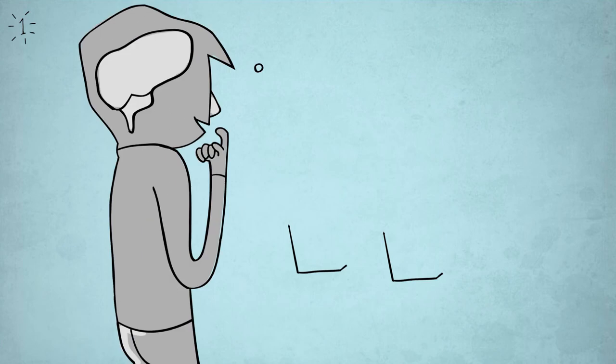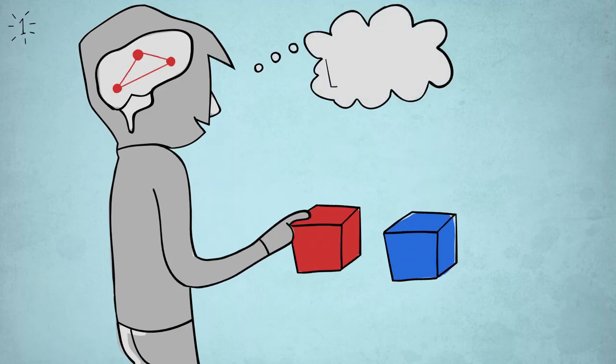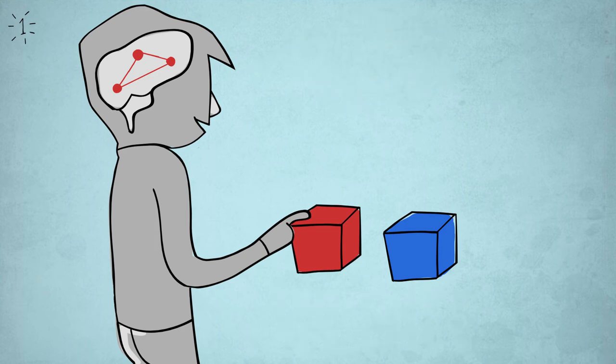Number 1: Some brain areas signal valence, meaning whether something is bad or good, to either avoid it or approach it in the future.